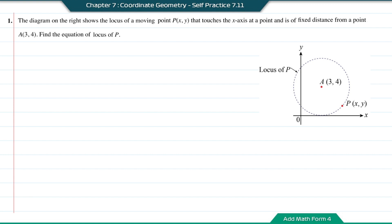The locus touches the x-axis at a point, so the x-axis will be the tangent. When we draw a straight line from that point to point A, which is the center, it will be 90 degrees. Based on the y-coordinate of point A, the distance from A to the touching point will be 4 units. So the distance from any point P to A will equal 4 units, as this is the radius.